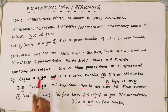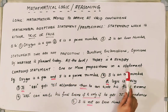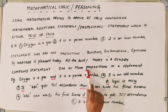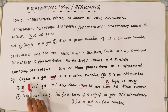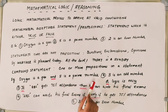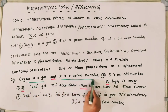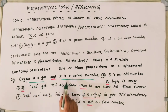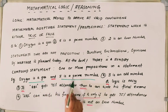We also have compound statements. A compound statement is a combination of one or more mathematically acceptable propositions. For example, 'oxygen is a gas and five is a prime number' — this entire thing is a compound statement. There are two statements here connected with 'and', which is the connector between them.